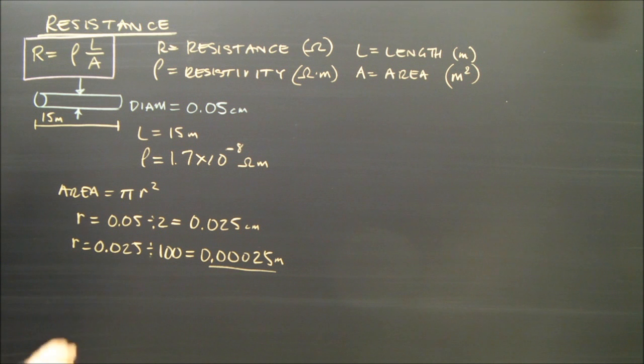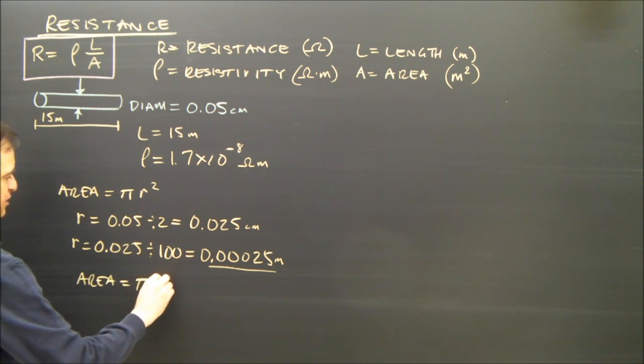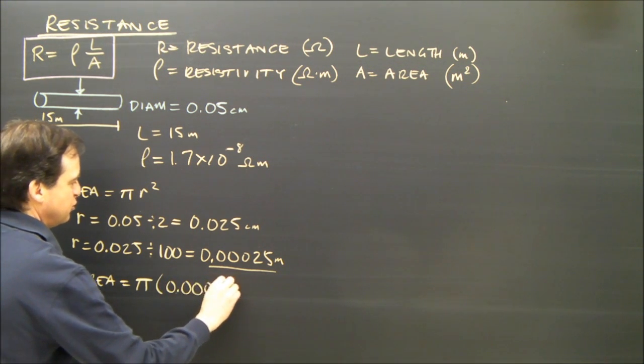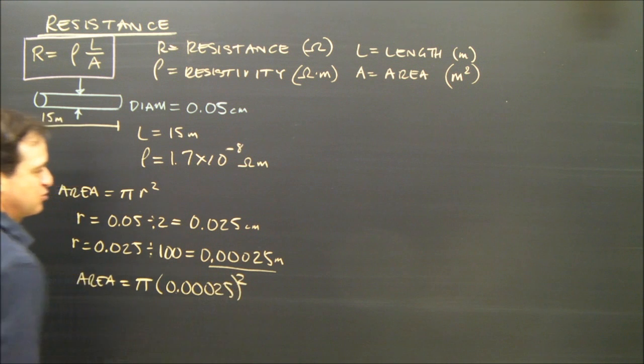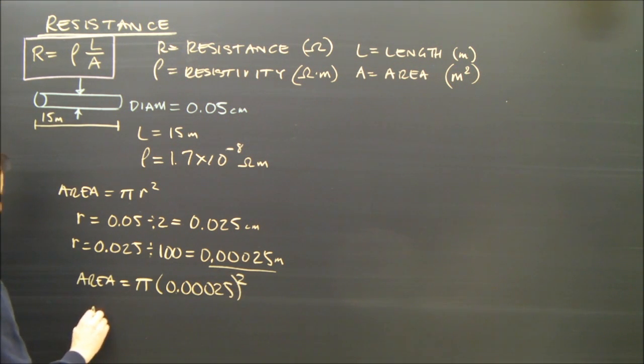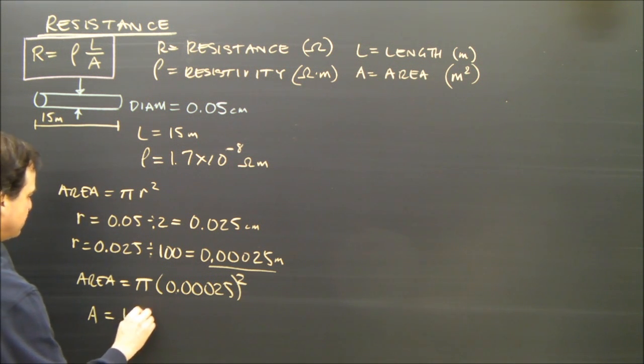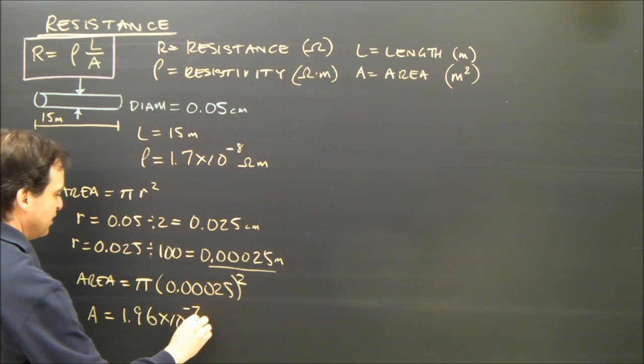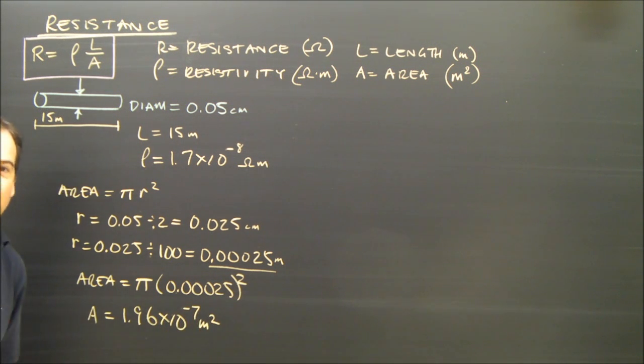Now I've got to find the area. The area is pi times r squared. 0.00025 squared. You can put it in scientific notation. So my area A equals 1.96 times 10 to the negative 7 meters squared. I worked that out beforehand.